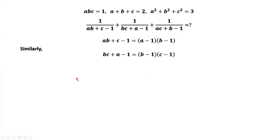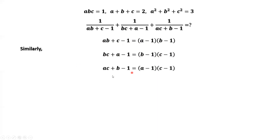So AB plus C minus 1 equals A minus 1 times B minus 1. Similarly, by symmetry, BC plus A minus 1 equals B minus 1 times C minus 1. You can see the pattern: AB gives A minus 1 times B minus 1, BC gives B minus 1 times C minus 1. Therefore, the denominator of the third term, AC plus B minus 1, equals A minus 1 times C minus 1.